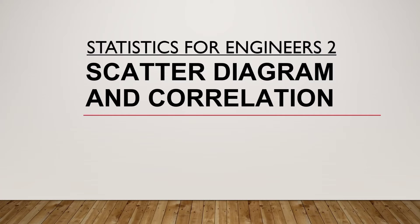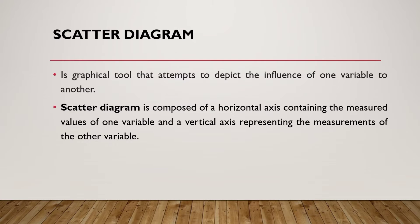Hello everyone, welcome to my class. Today we're going to discuss the topic under Statistics for Engineers: the scatter diagram and correlation. Let's start with the scatter diagram. It is a graphical tool that attempts to depict the influence of one variable to another. A scatter diagram is composed of a horizontal axis containing the measured values of one variable.